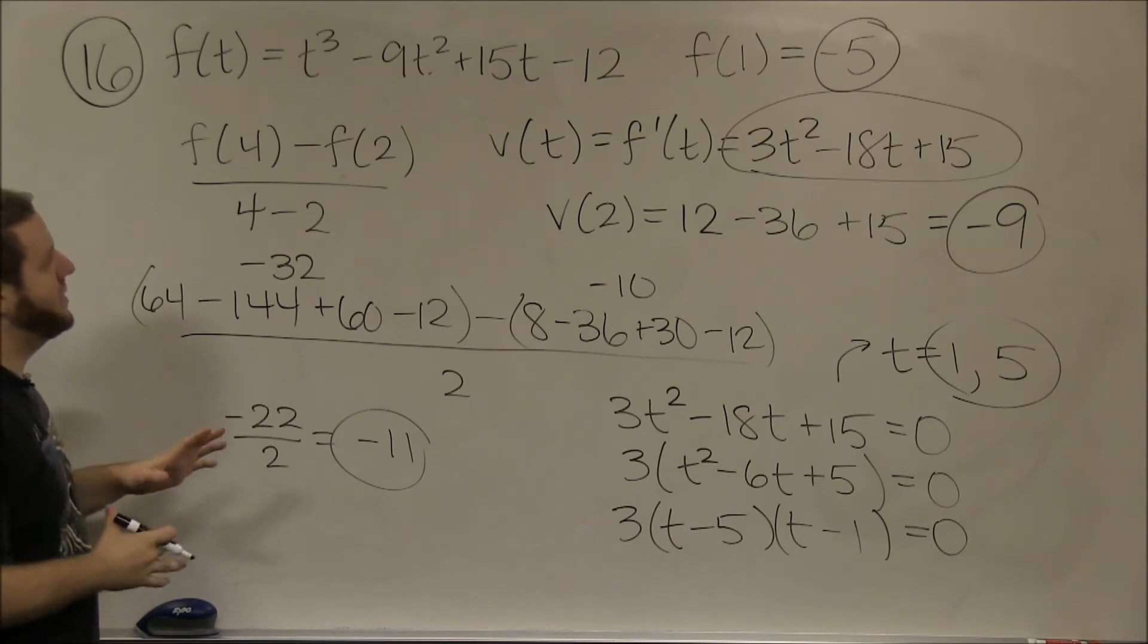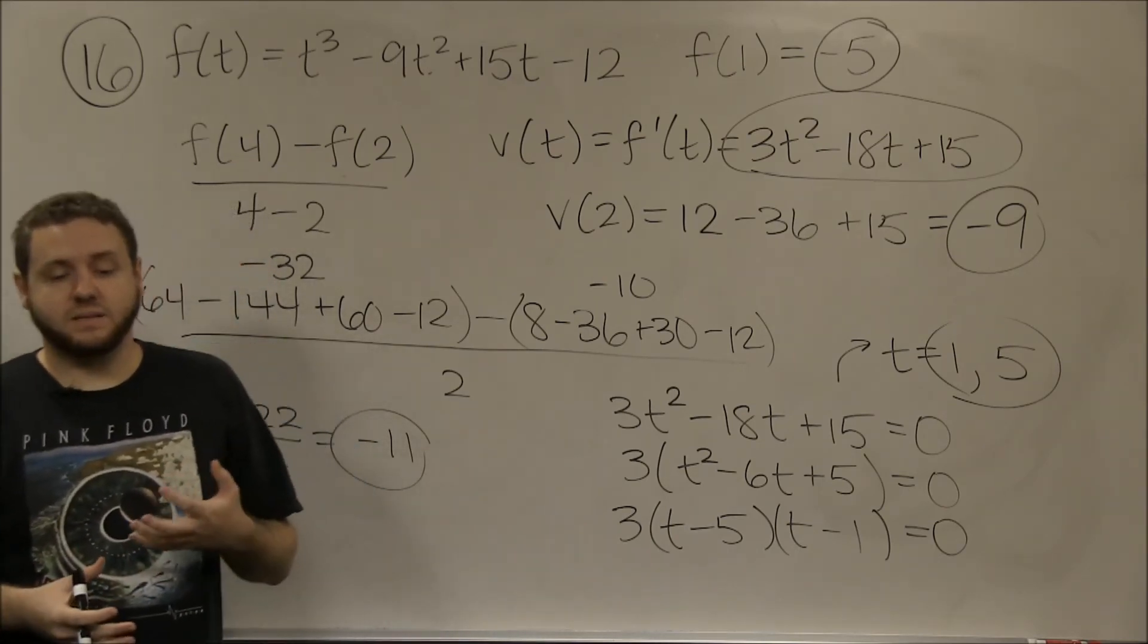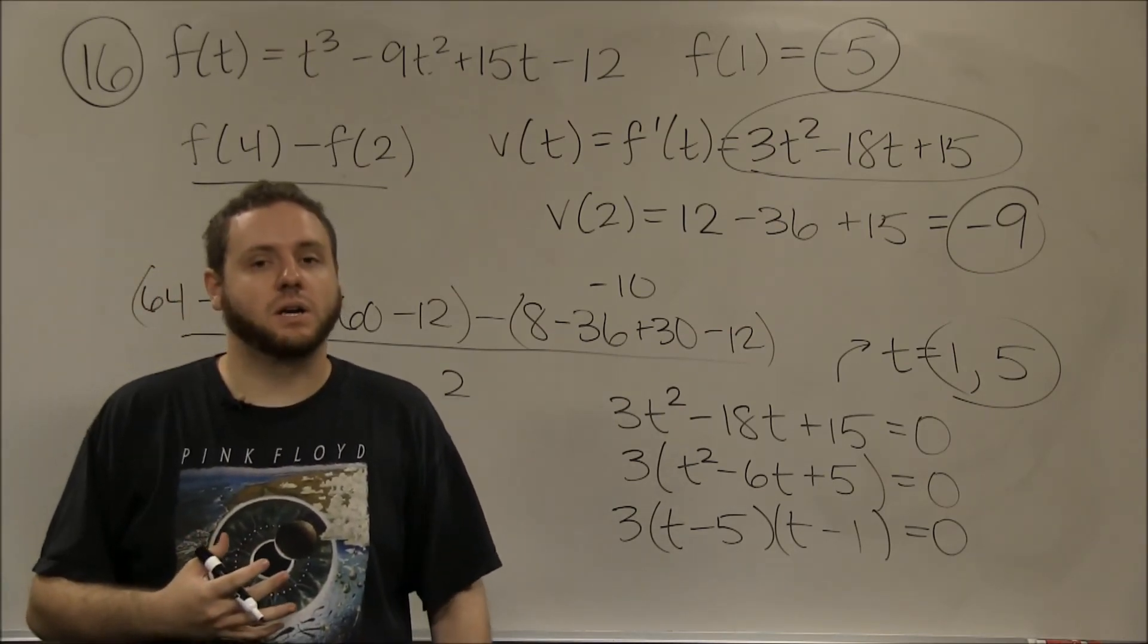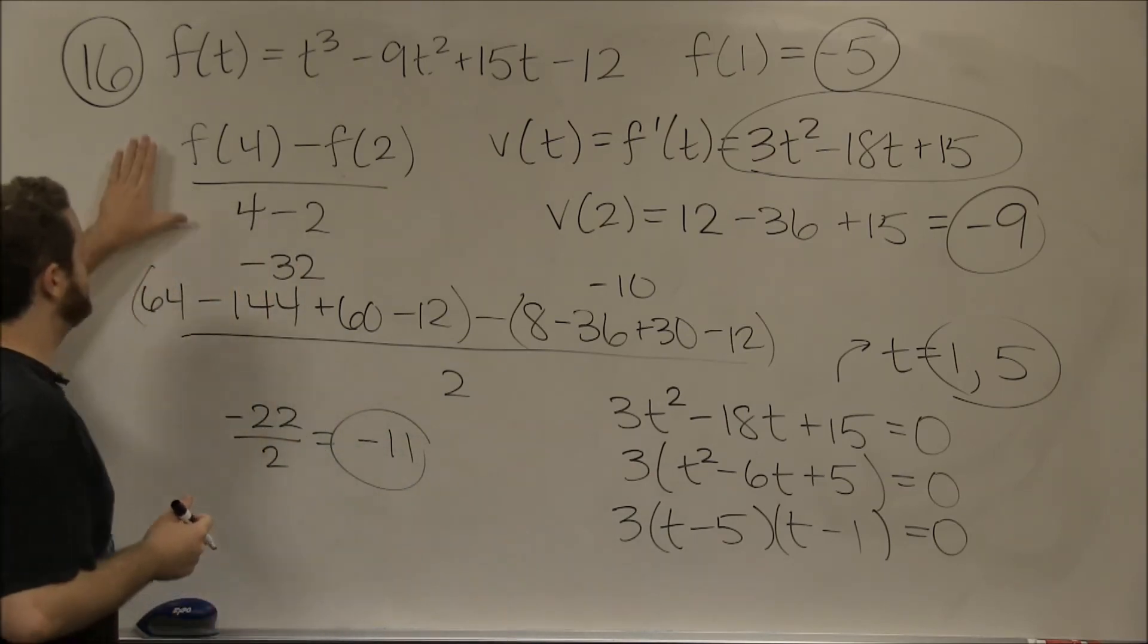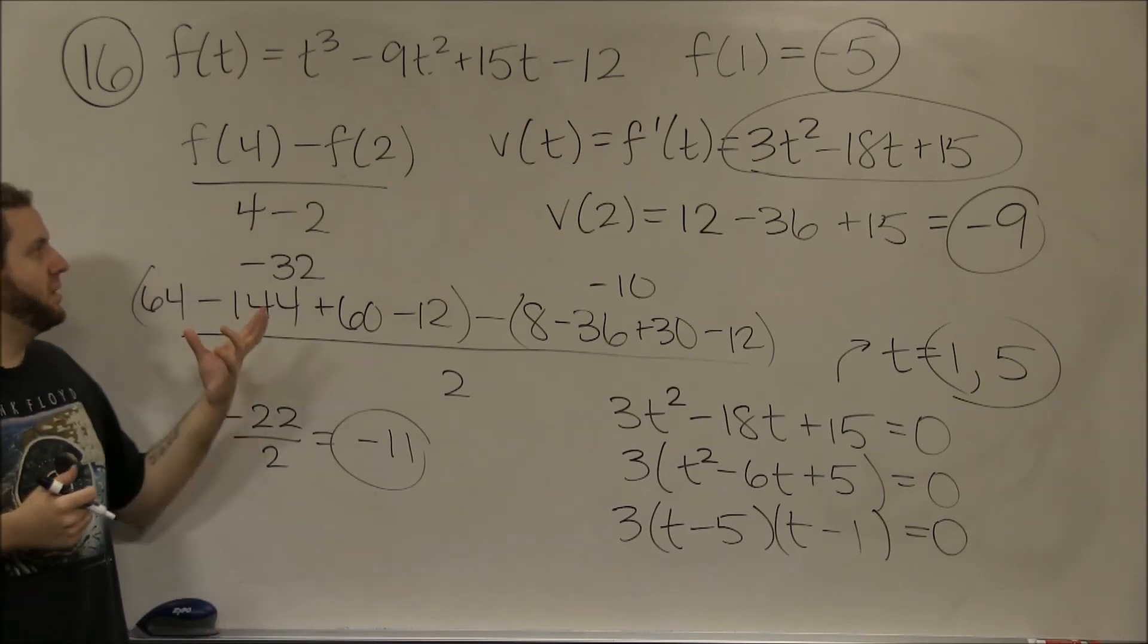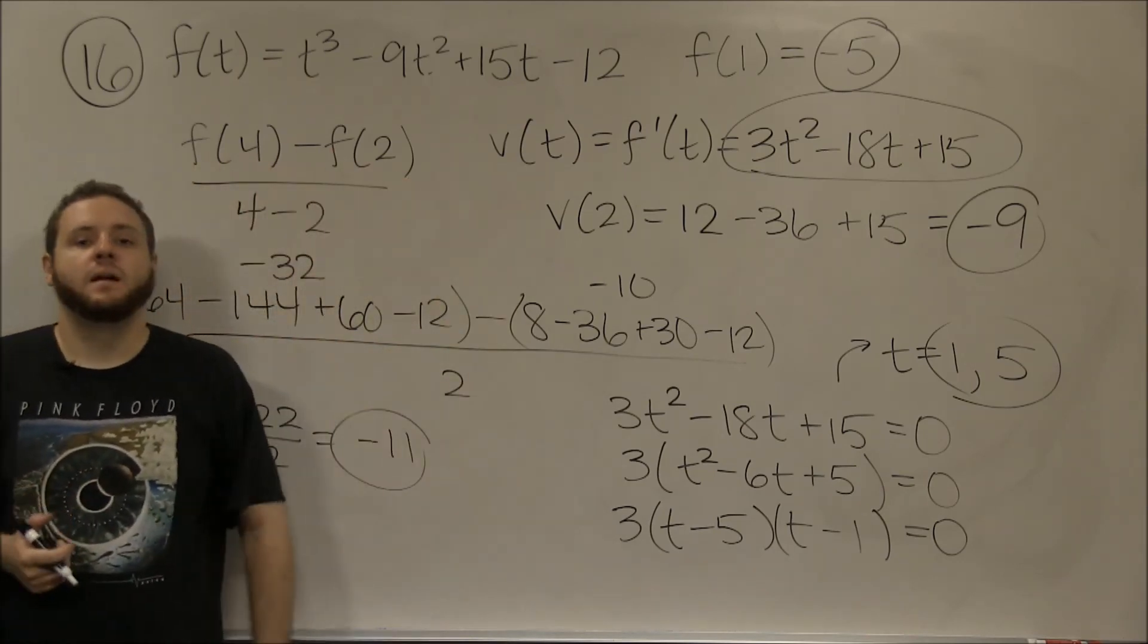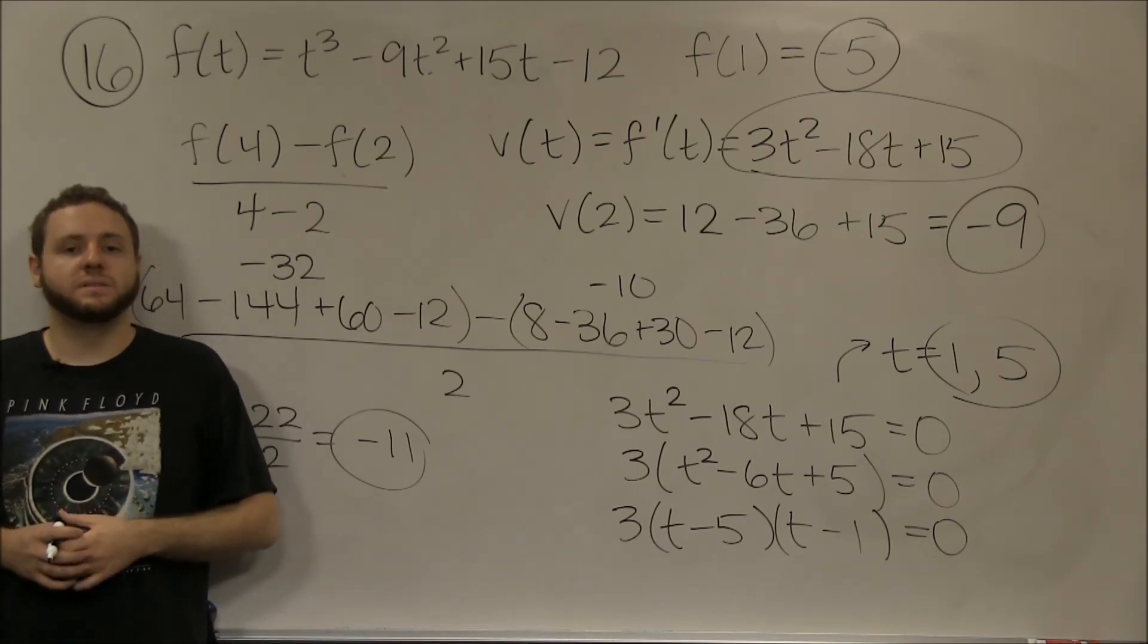We need to know that velocity is the derivative of position. Velocity and instantaneous rate of change are exchangeable when your function is talking about position. We also need to know that average rate of change is just the slope between two points: f(b) - f(a) over b - a. That's average rate of change, which is still just the slope between two points.